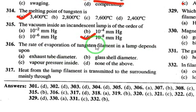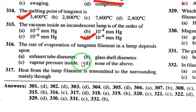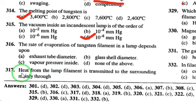The rate of evaporation of tungsten filament in a lamp depends on vapor pressure. If vapor pressure is more, the rate of evaporation of the tungsten filament increases.